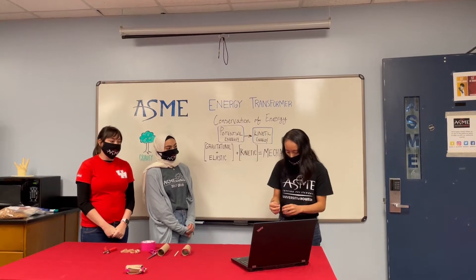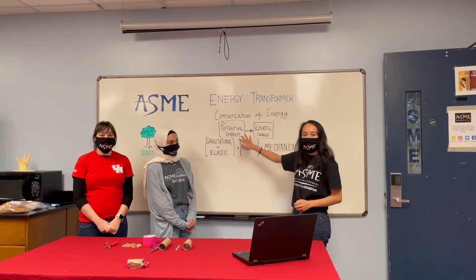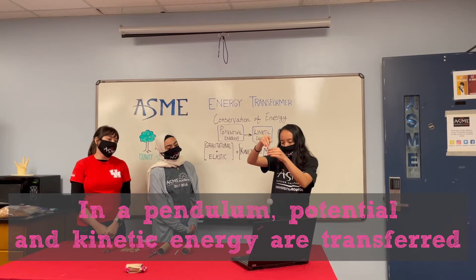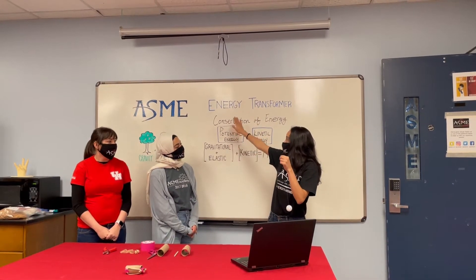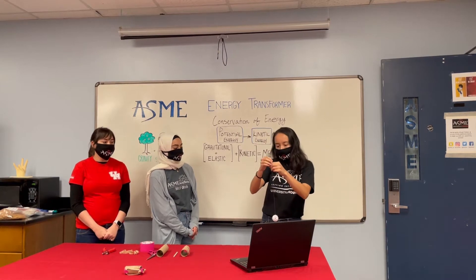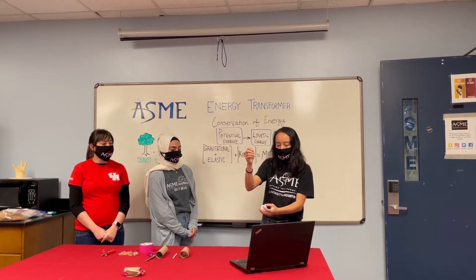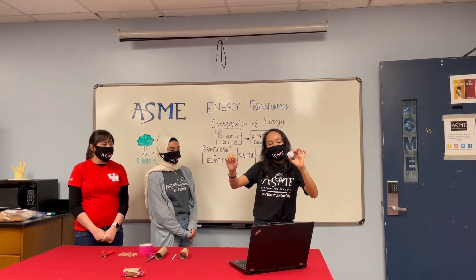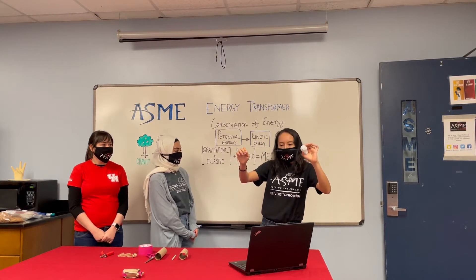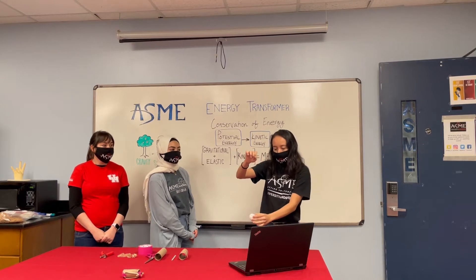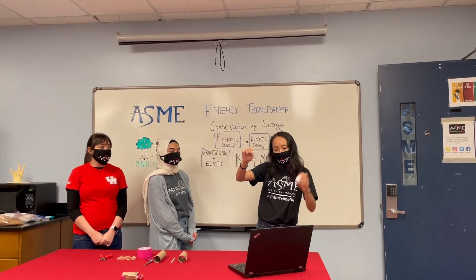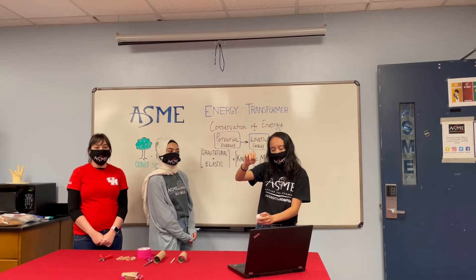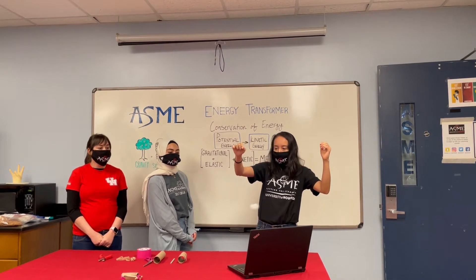An easy demonstration of the vice versa relationship with potential and kinetic energy is via a pendulum. Here we have a string attached to a ping pong ball. As potential energy increases, kinetic energy decreases. Potential energy is how much stored energy is in the ping pong ball based on how far away it is from the ground. As we hold it high up, there's a lot of potential energy stored. But as we let it go and it moves closer to the ground, kinetic energy increases because it's moving, while potential energy decreases.